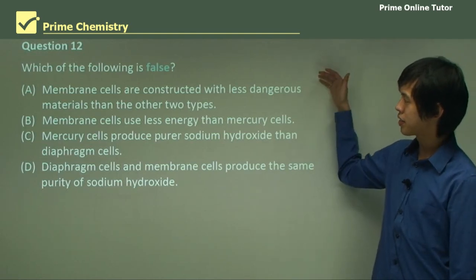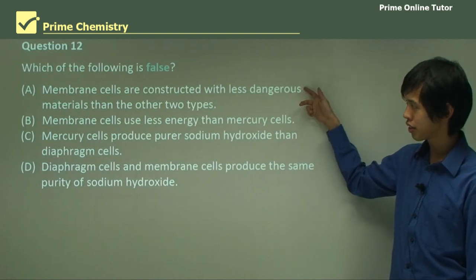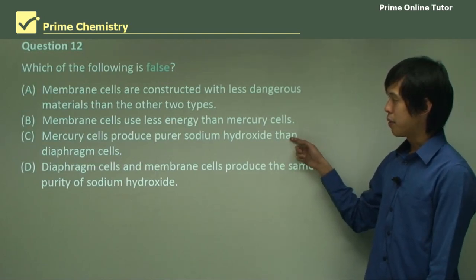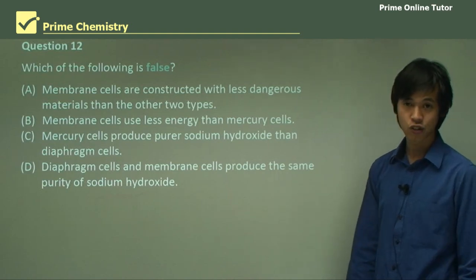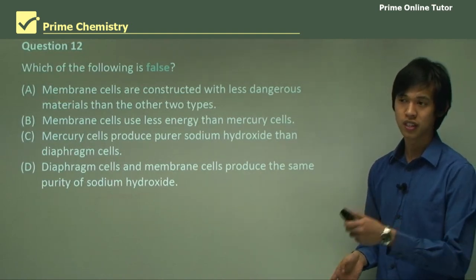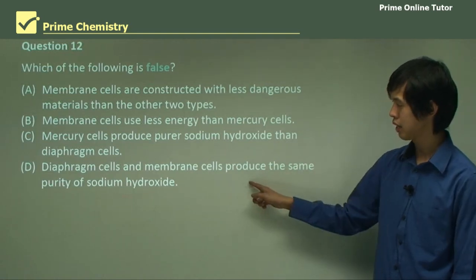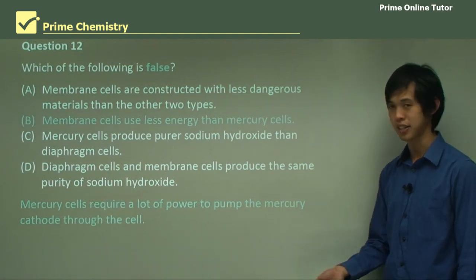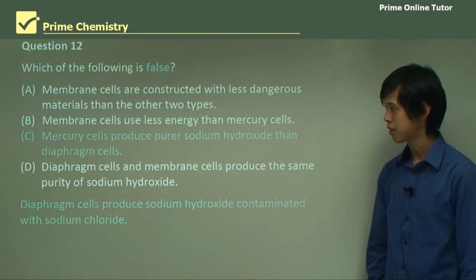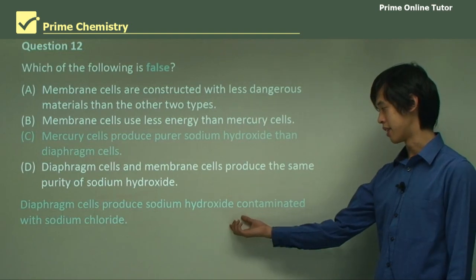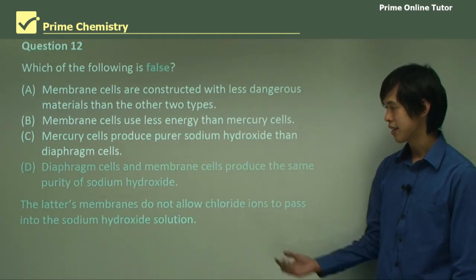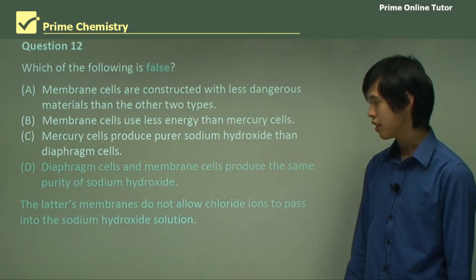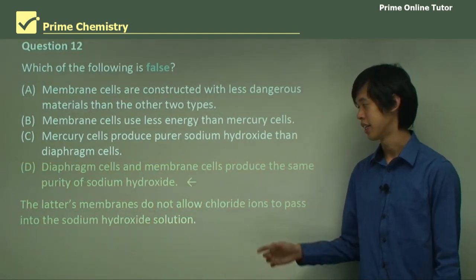Question 12: which of the following is false? Membranes are constructed with less dangerous materials than the other types — that's true. Membrane cells use less energy than mercury cells — true, because we're not reducing sodium. Mercury cells produce purer sodium hydroxide than diaphragm cells — that's also true, since there are no chloride ions moving into the sodium hydroxide cell. So D must be the answer: the claim that membrane cells do not allow chloride ions to pass is false relative to the statement about diaphragm cells having lower purity than membrane cells.